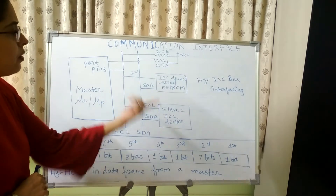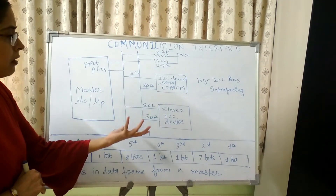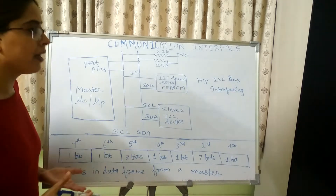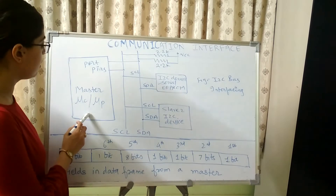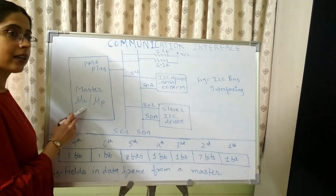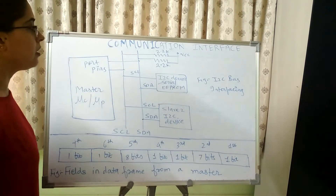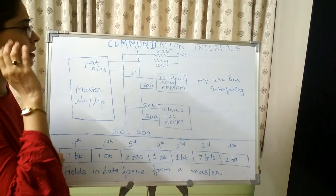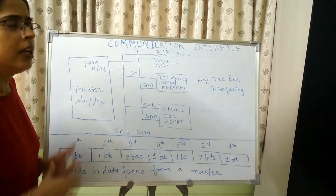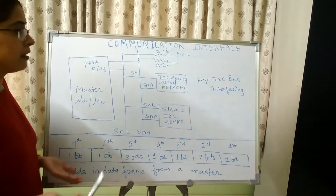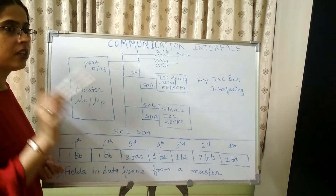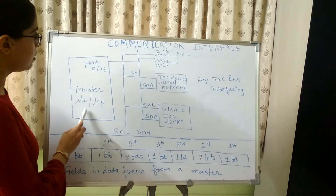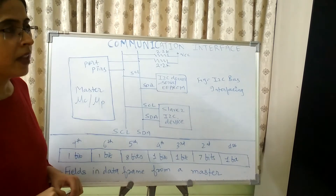Whenever a slave device is present, it always waits for the response from the master device. Any device can act as either a transmitter or receiver. The master device can act as a receiver or as a transmitter, and the slave device can also act as a receiver or transmitter. However, regardless of whether the master is acting as transmitter or receiver, the duty of sending clock pulses always belongs to the master device. Slave devices do not send clock pulses.